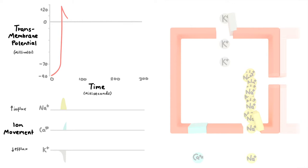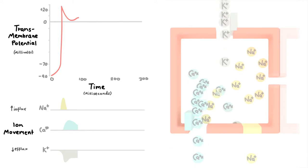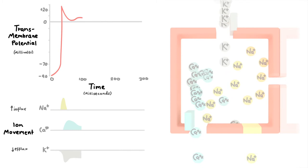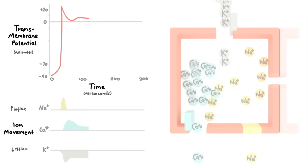Very shortly afterward, voltage-gated calcium channels open and calcium moves into the cell down its concentration gradient. Again, there is an initial rush followed by a steady flow. You can see here that these two processes are happening simultaneously.